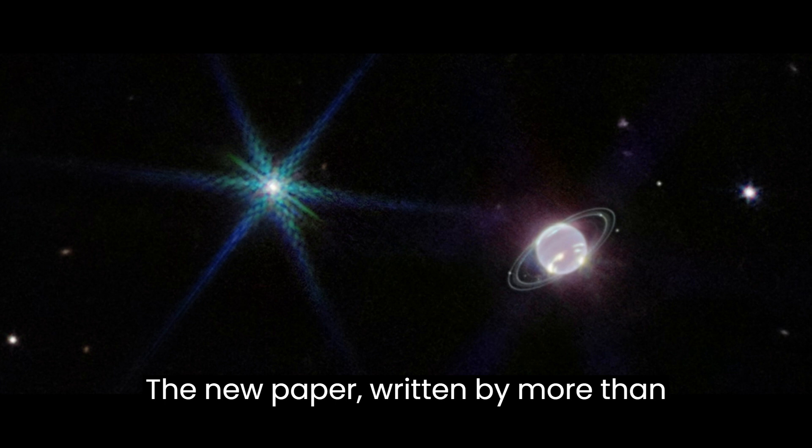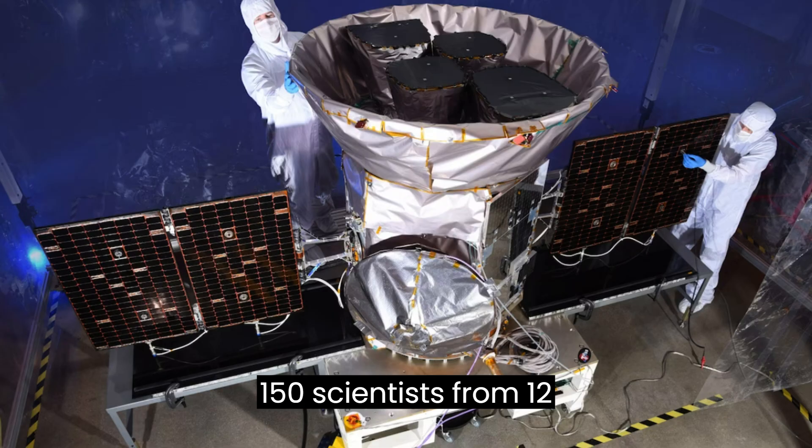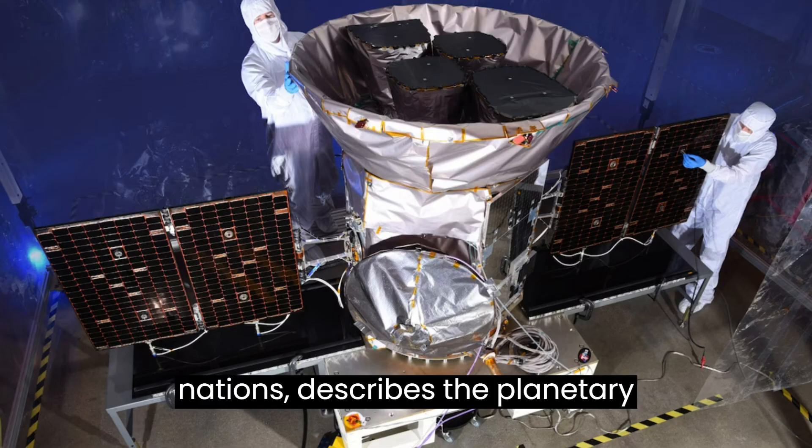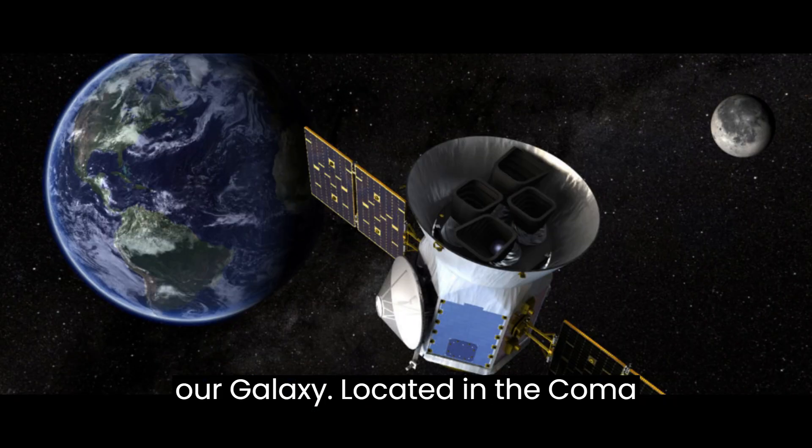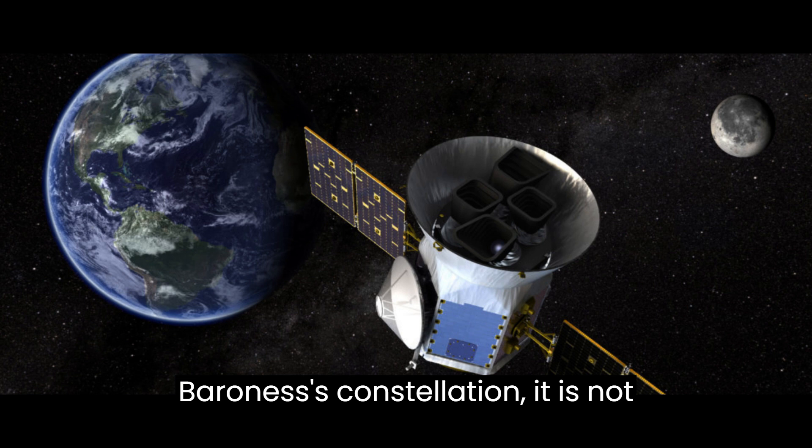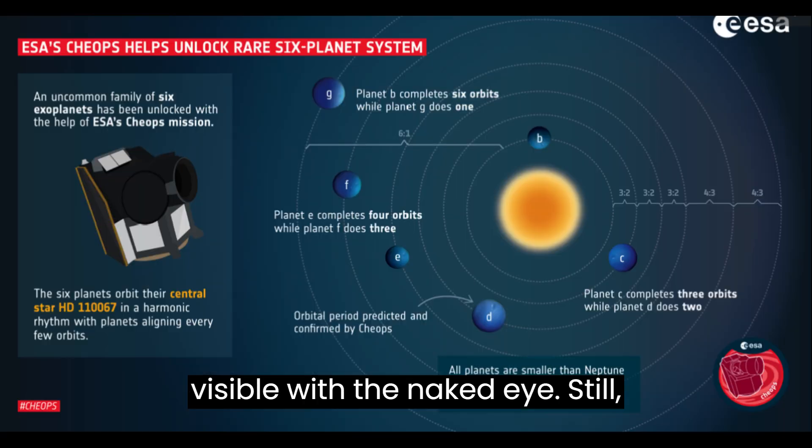The new paper, written by more than 150 scientists from 12 nations, describes the planetary system of HD 110067, a star in our galaxy. Located in the Coma Berenices constellation, it is not visible with the naked eye.